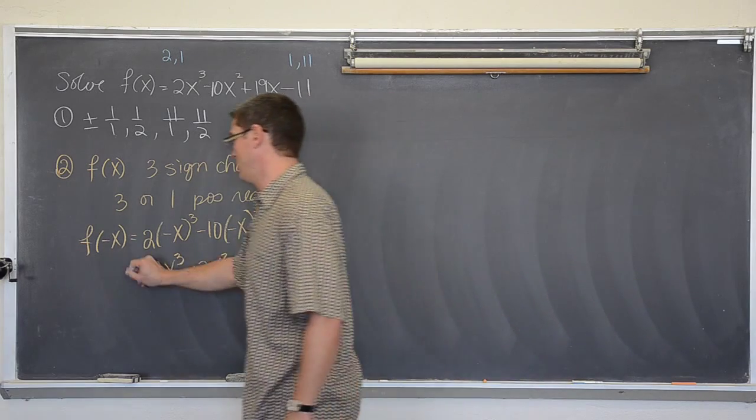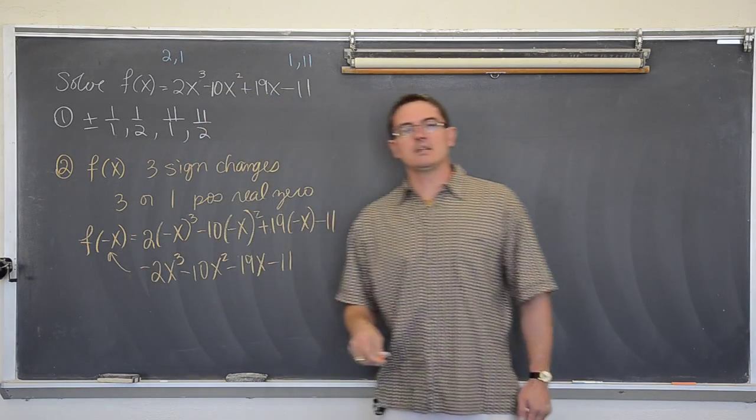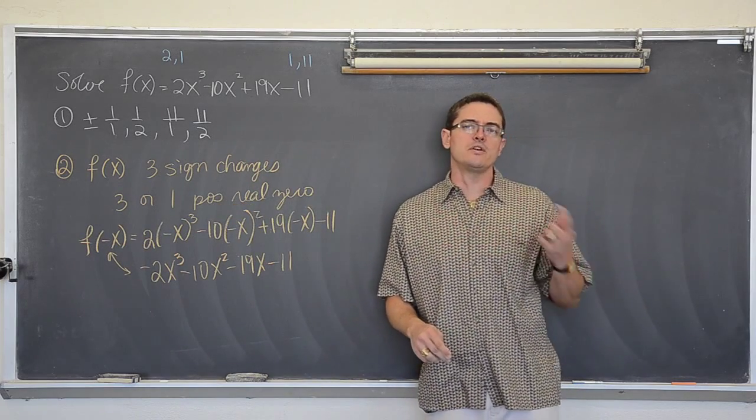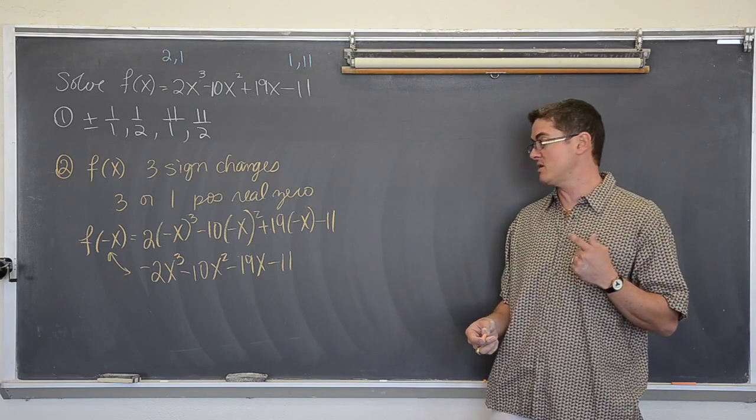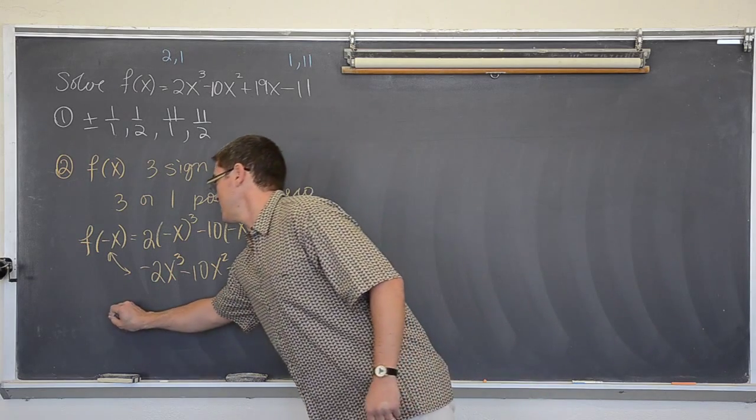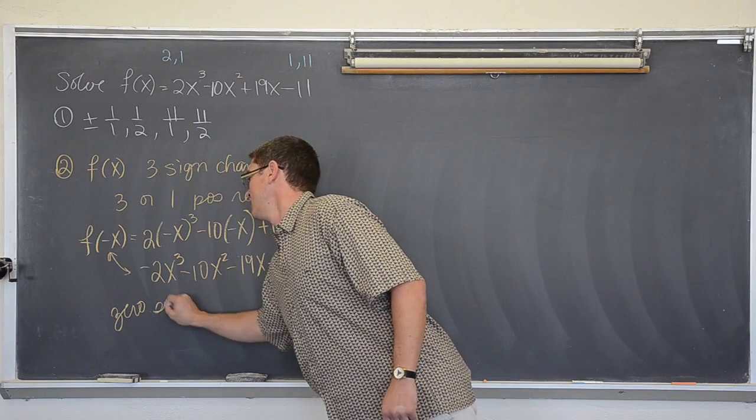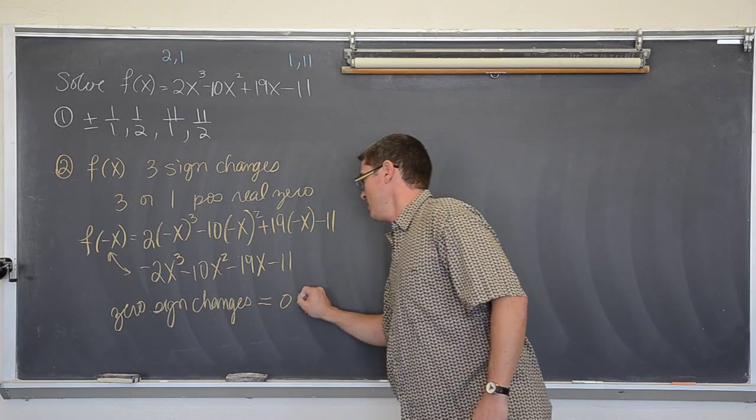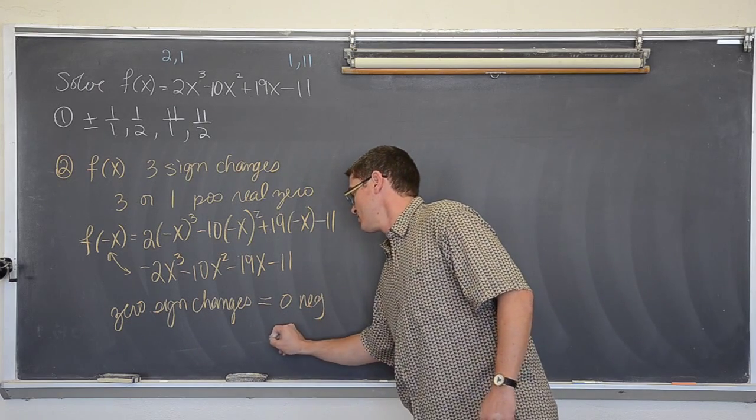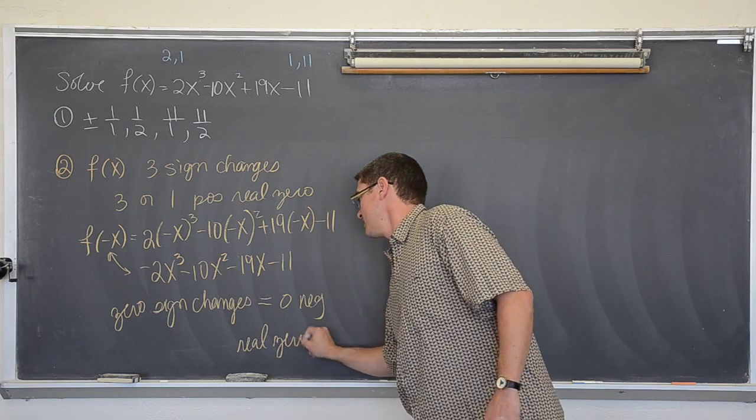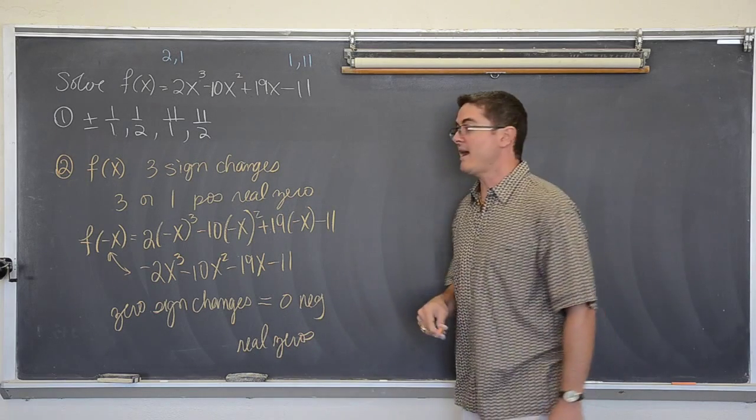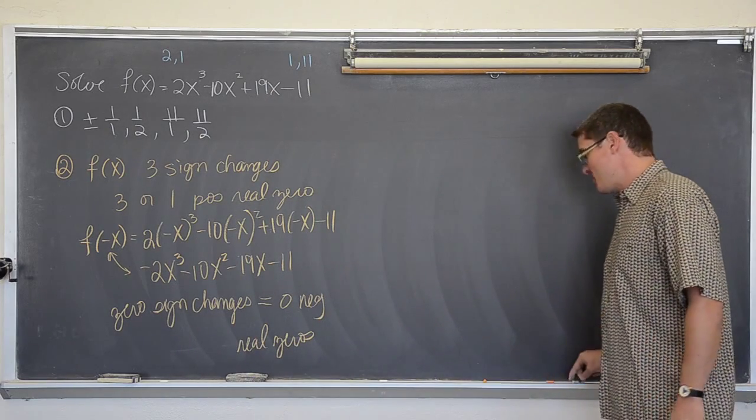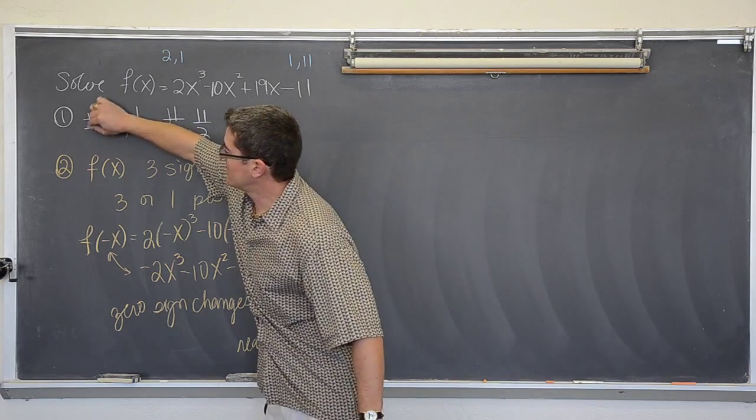So when you cube a negative number it stays negative. So we are going to have negative 2x cubed, negative 10x squared, negative 19x minus 11. This is really cool. When I plugged in negative x, I got a polynomial where all of the coefficients are negative. So there is zero sign changes, which means zero negative real zeros.